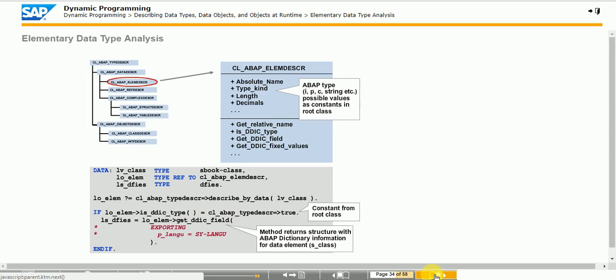Use an optional parameter to determine language-dependent information such as field labels in a language other than the current logon language. The figure shows a call of method GET_DDIC_FIELD. Caution! If the current type is not a dictionary type, the method raises a conventional exception. To avoid this, use method IS_DDIC_TYPE to check whether dictionary information is available.